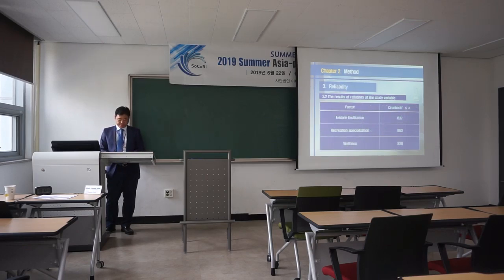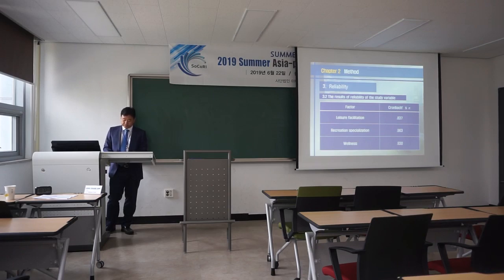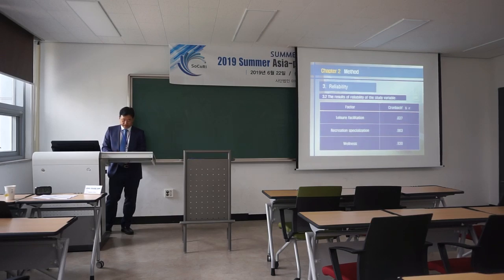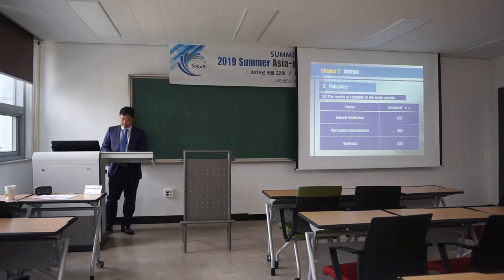Next is reliability. The overall reliability of the leisure facilitation scale was CFI=0.916, recreational specialization was CFI=0.963, and the wellness scale was CFI=0.930.